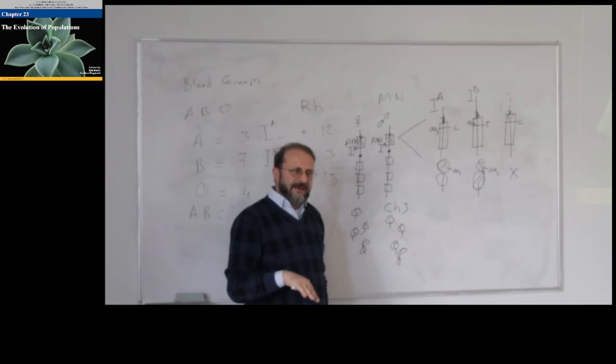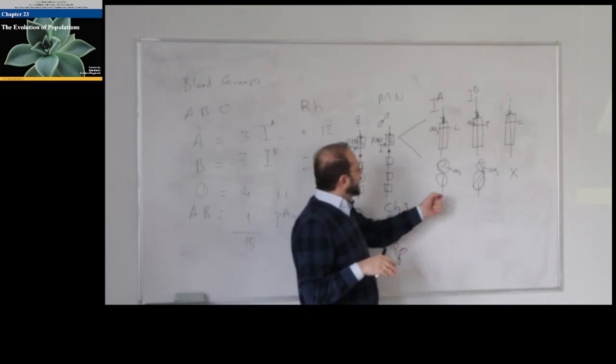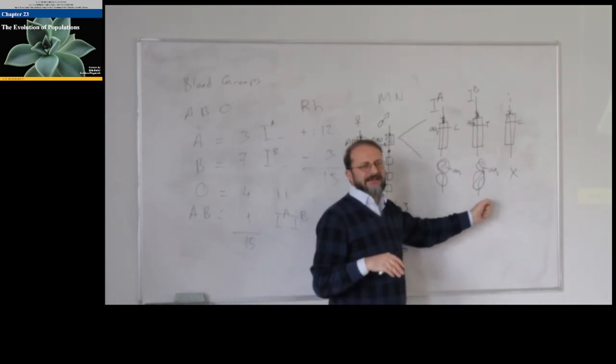We have ABO gene and we have three different versions of the same gene of ABO gene. Those are alleles. One allele is A, the other one is B, the other one is zero.